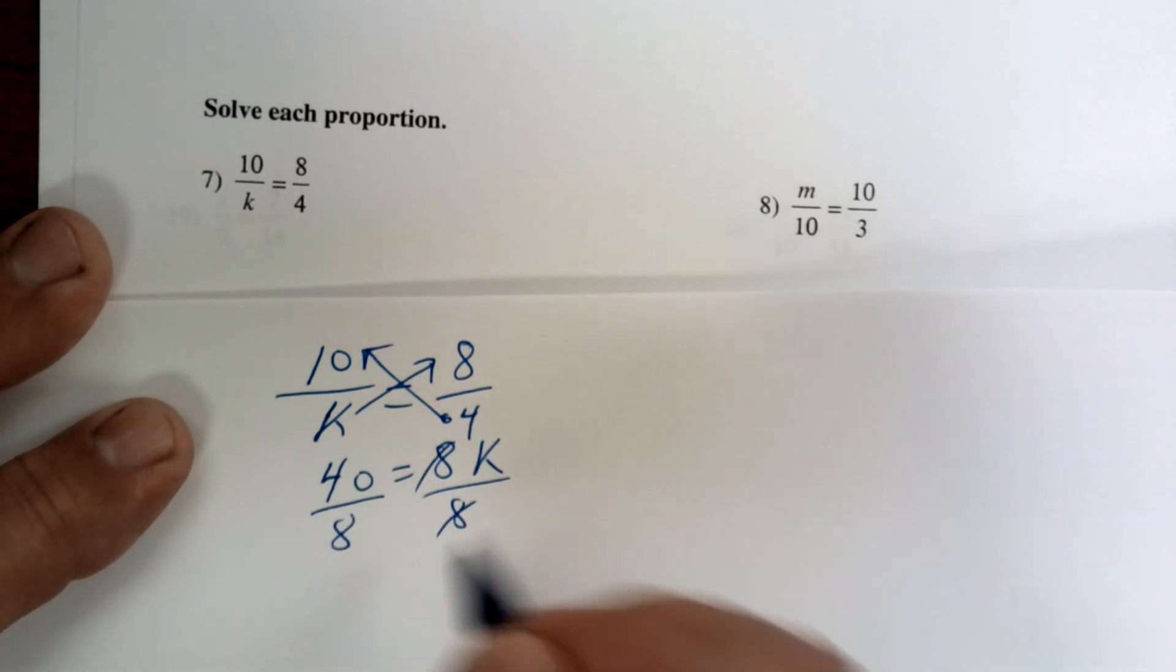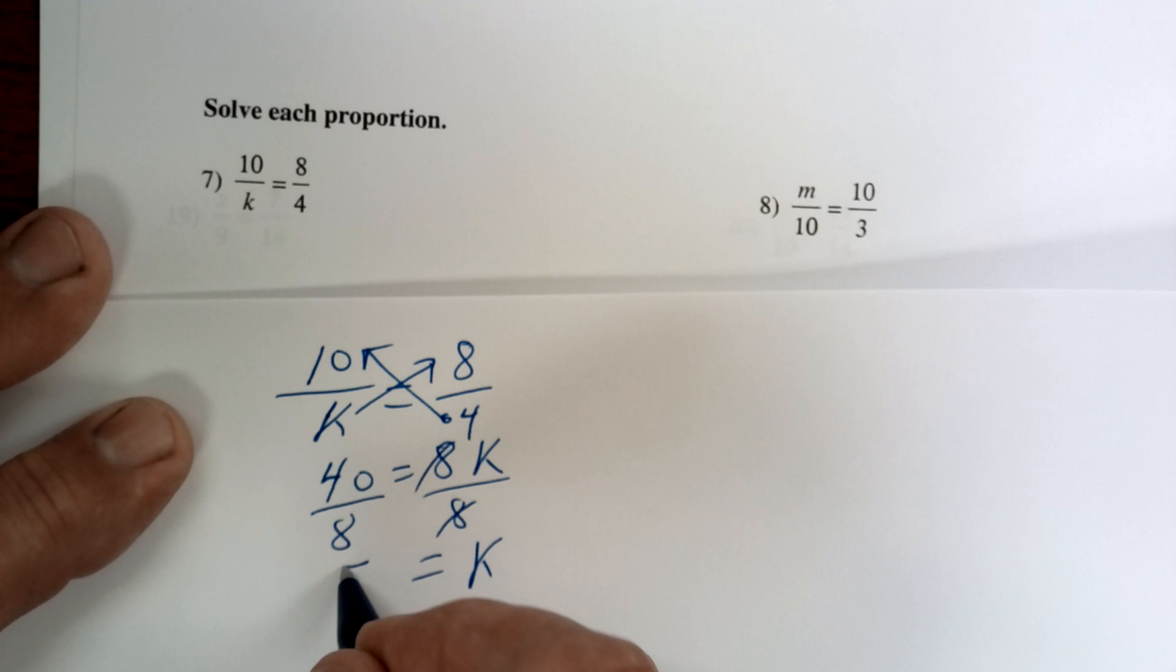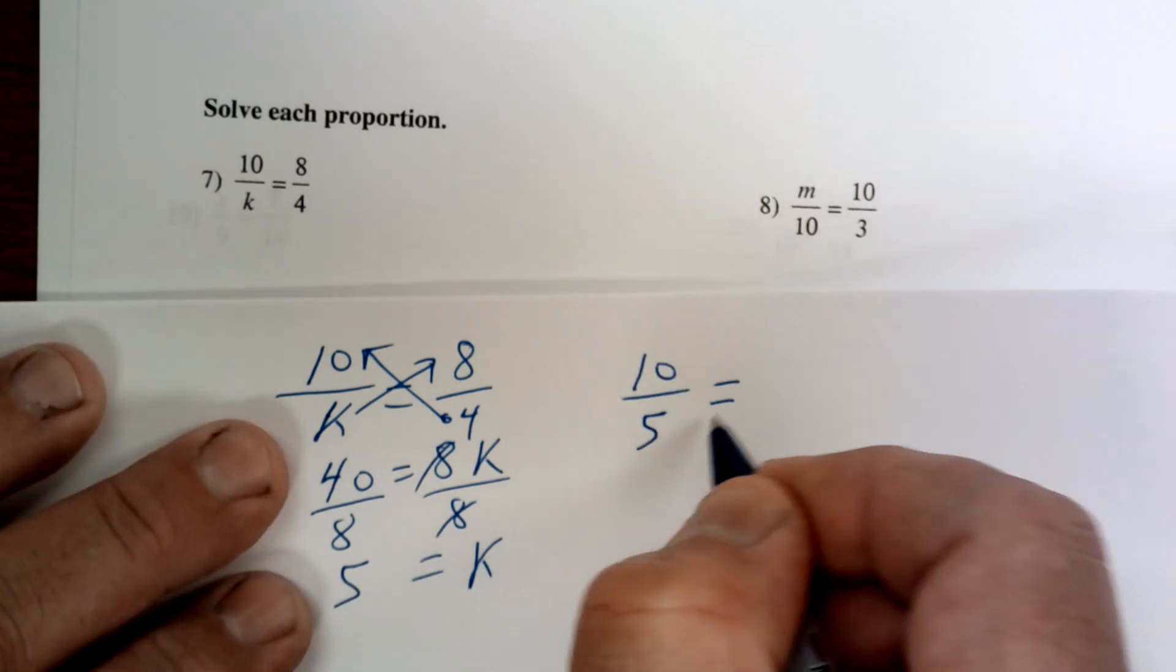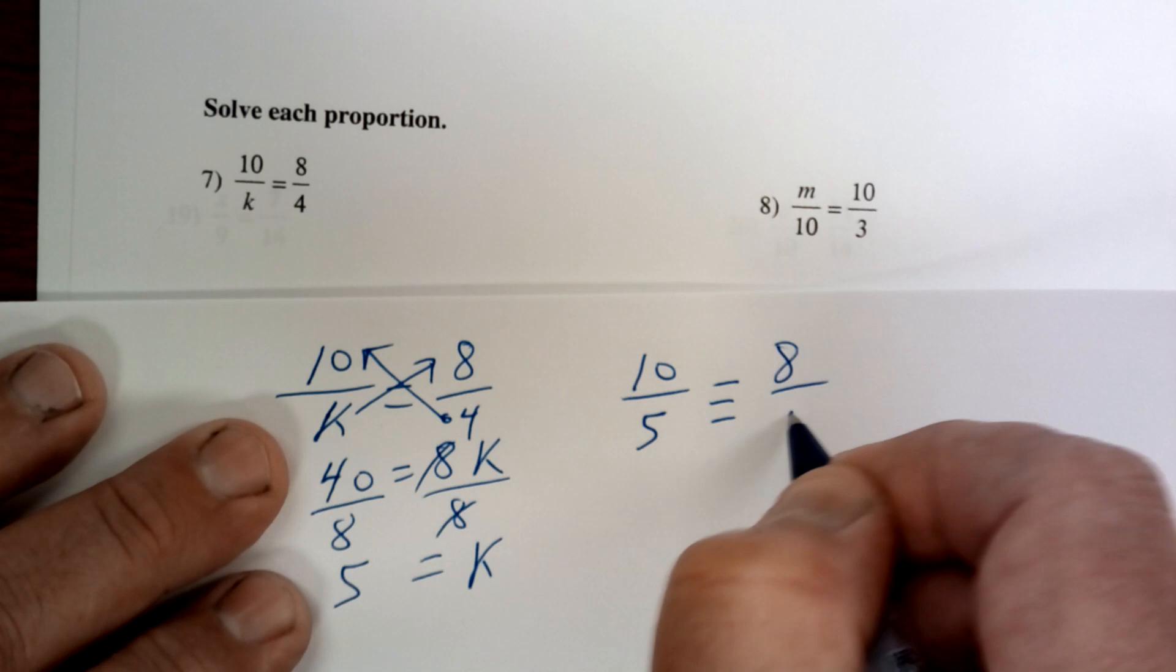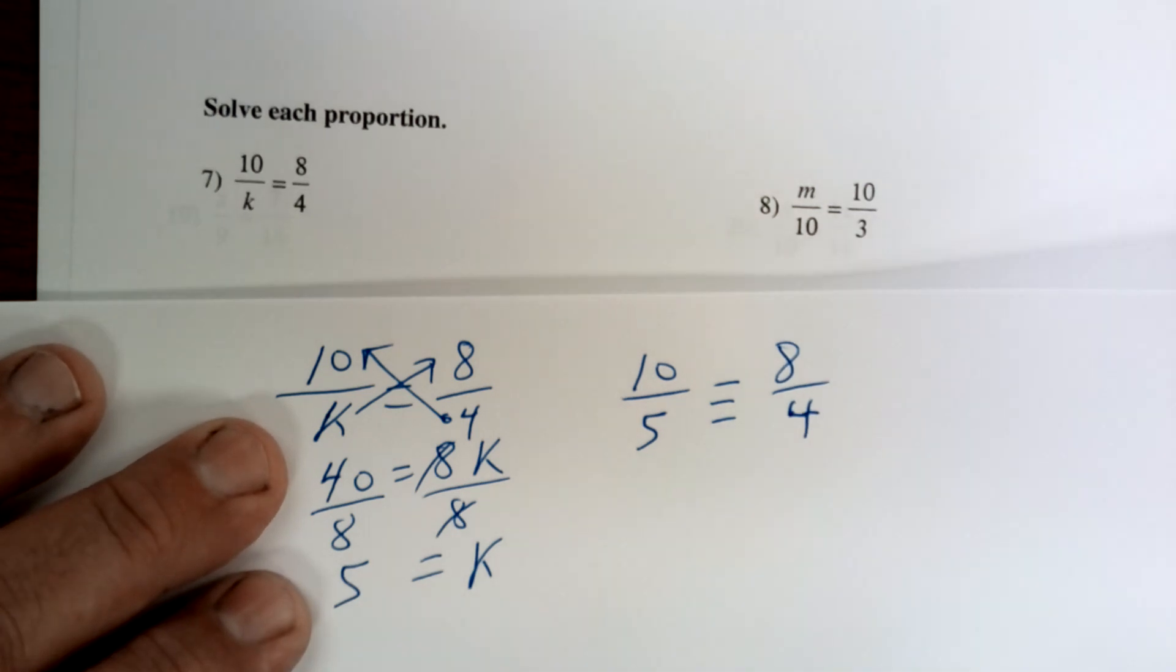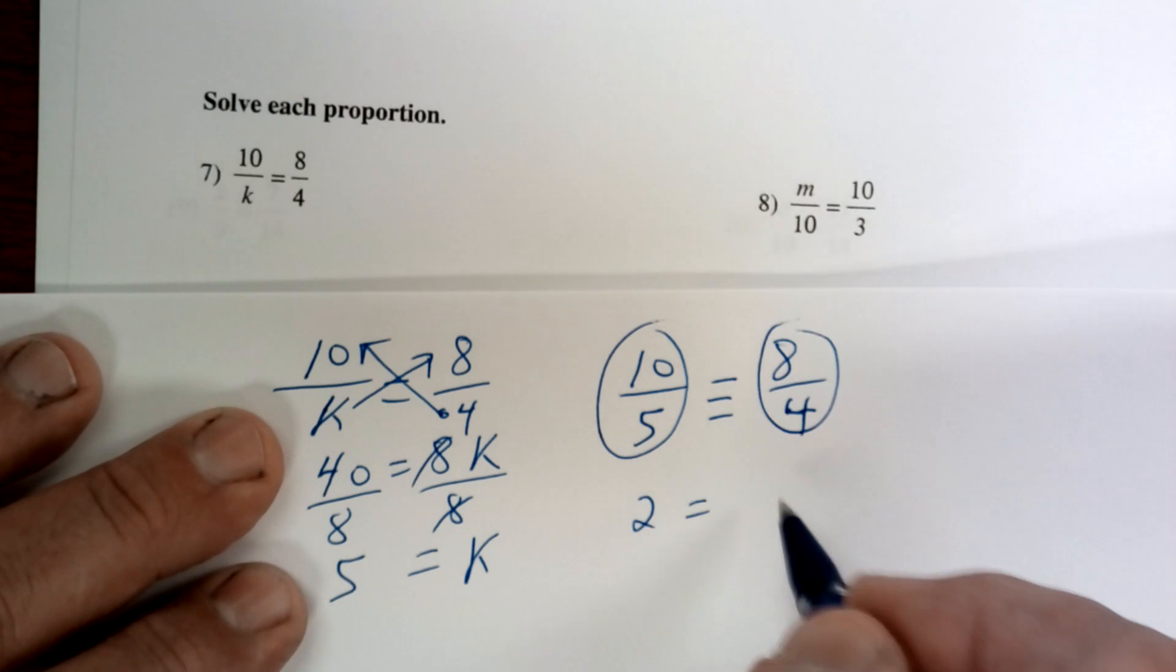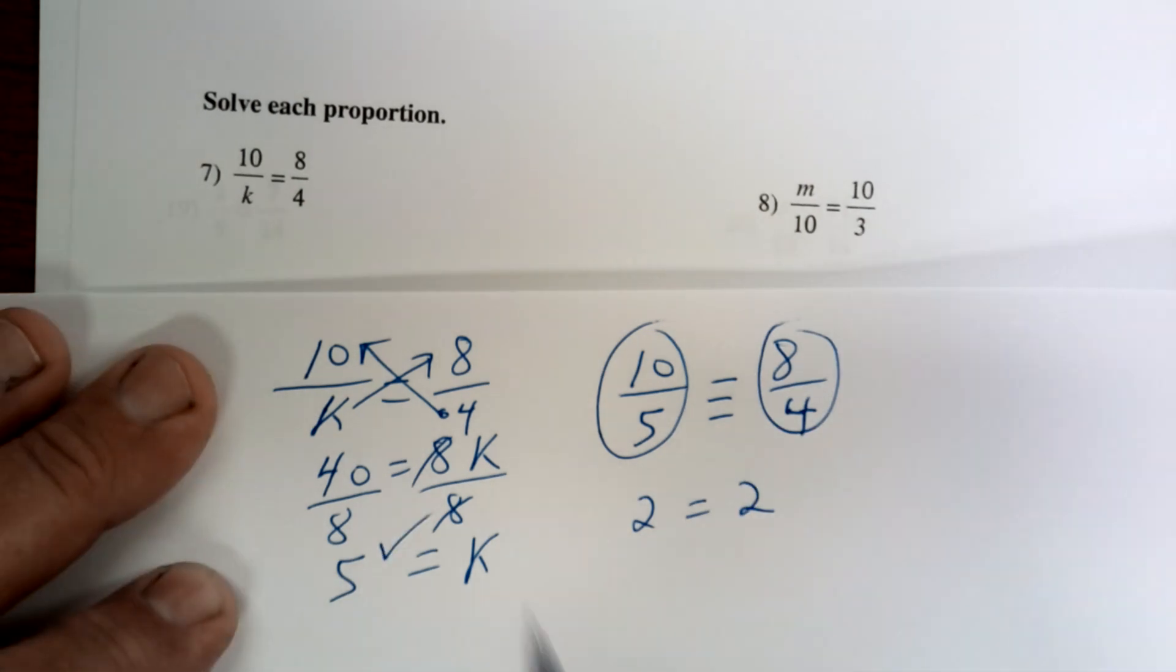Then you divide by 8 and that gives you 5. So 10 over 5 has to equal 8 over 4. It's a proportion. This is 2 and this is 2, so yes, this is the correct answer. That's how you do those - you cross multiply.